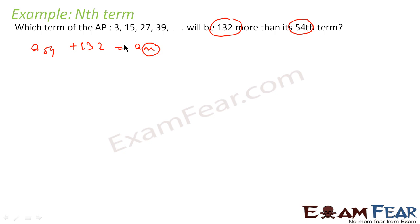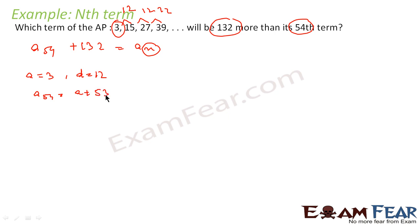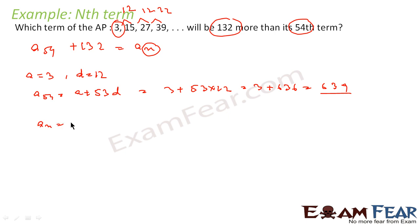a54 equals 3 plus 636, which is 639. Now an equals 132 plus a54, so an equals 132 plus 639, which is 771. We use the formula an equals a plus (n minus 1)d: 771 equals 3 plus (n minus 1) into 12. So n minus 1 equals (771 minus 3) by 12, which is 768 by 12, giving n minus 1 equals 64, and n equals 65.